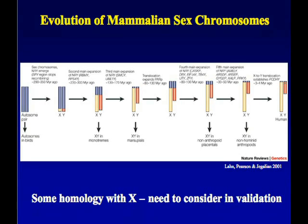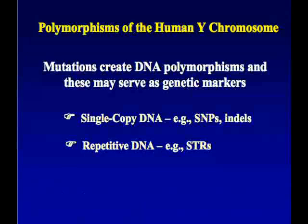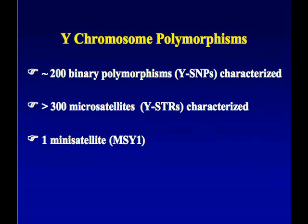When we look at a profile, particularly with SNPs, which are very stable markers, we're actually looking at a history of millions of years of evolution, or hundreds of thousands of years if we're looking just at more recent human evolution. There are about 200 SNPs that have been reported, over 300 STRs reported in the literature, and one mini-satellite. We're going to concentrate our efforts mostly on Y-STRs because they're going to give us the best value for forensic attribution.